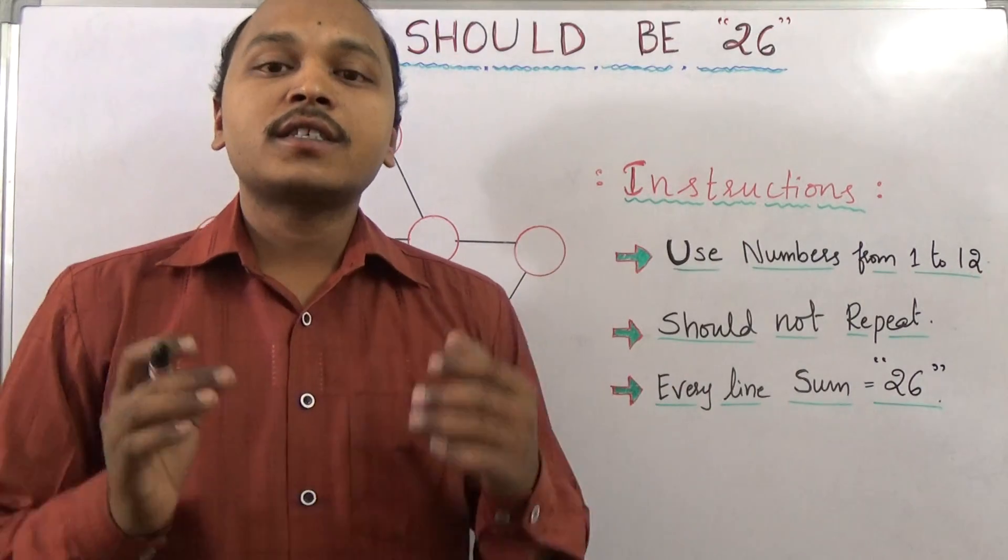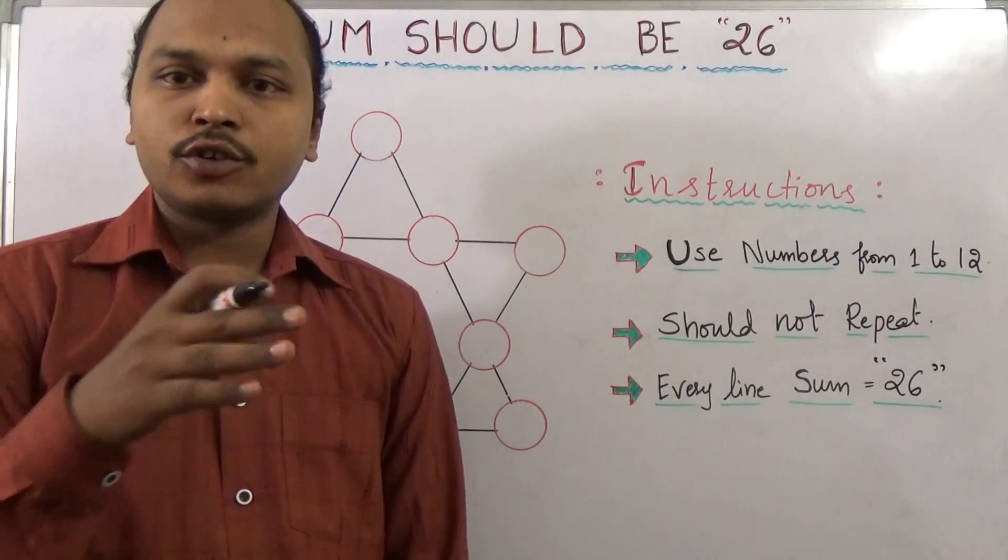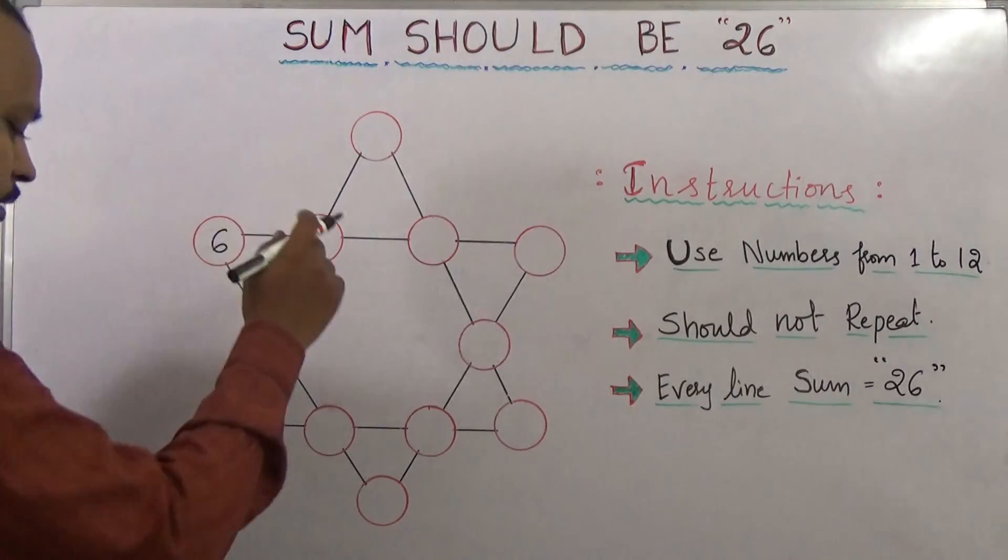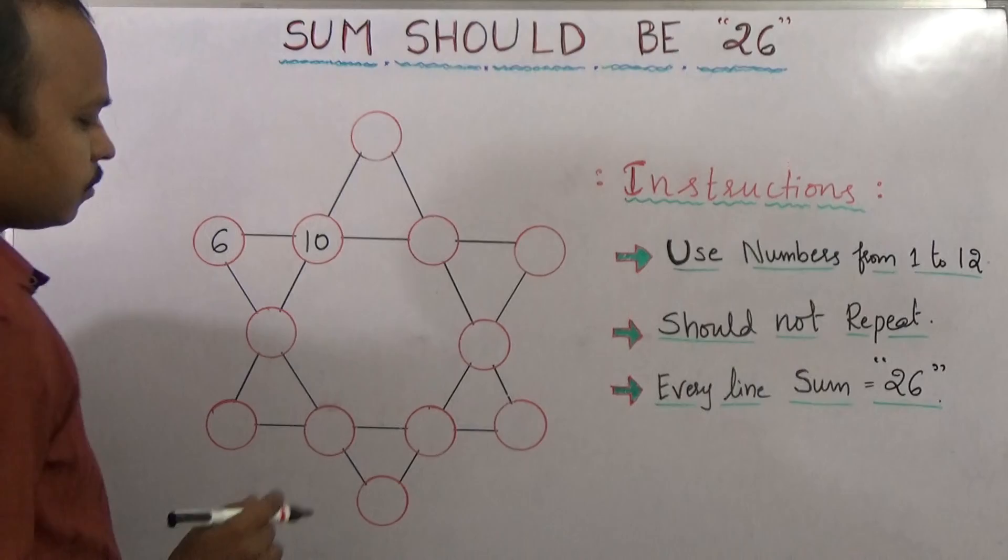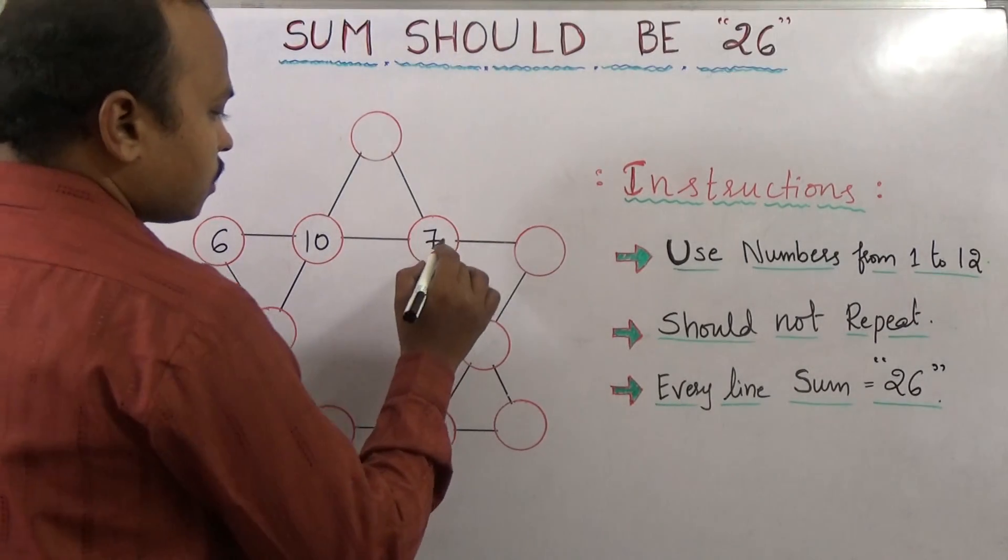Let me explain a simple example. You should not repeat numbers. You can try your own numbers. For example, 6, then 10 - that's 16, then 7, and to make it 26 I can take 3.